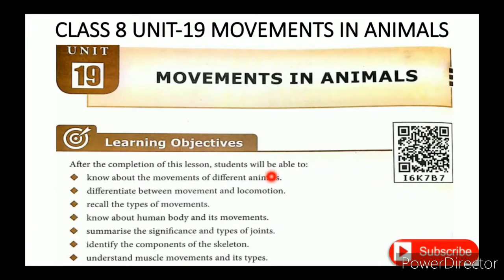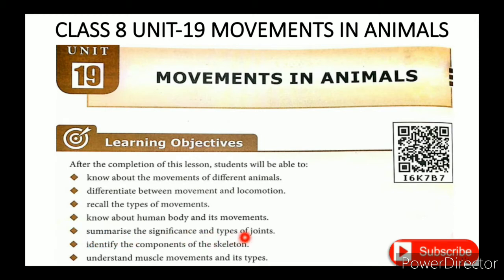In the lesson order, the learning objectives are: movements of different animals, differentiate between movement and locomotion, recall the types of movements, know about the human body and its movements, summarize the significance and types of joints, identify the components of the skeleton, understand the muscles, movement and its types.